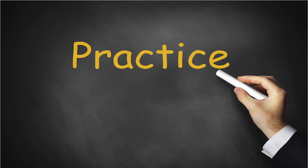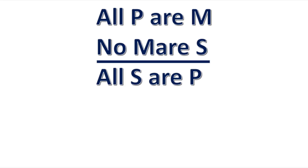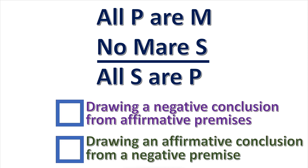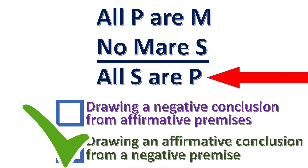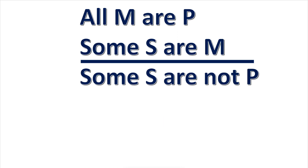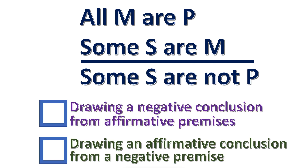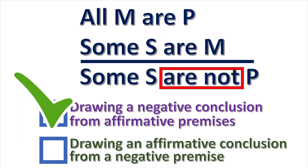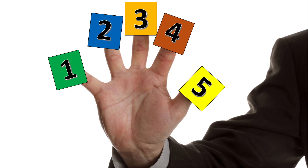Practice problems for rule four: the second premise is negative but the conclusion is affirmative — that breaks rule four. In the next problem, both premises are affirmative but the conclusion is negative — that also breaks rule four.